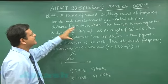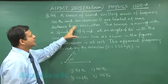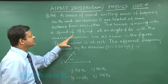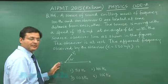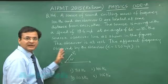You see a source of sound emitting waves of frequency 100 hertz and an observer O are located at some distance from each other. This is a kind of question in which the source is moving at some angle compared to the observer. This diagram has been given to you in the question.